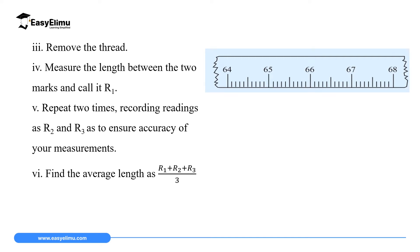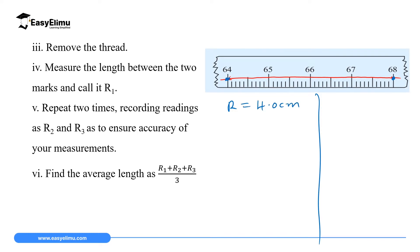After doing your 10 wraps, you remove the thread — say the red thread — and place it on top of a meter rule or another measuring instrument. The thread has two marks. You measure the distance between them; for example, 68 minus 64 gives 4.0 centimeters. This measurement is recorded as R1.